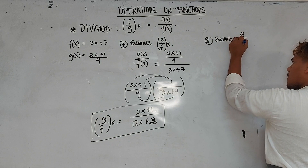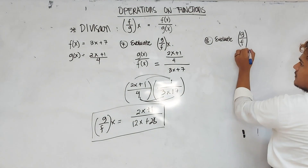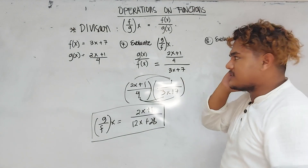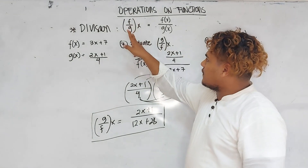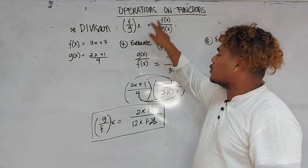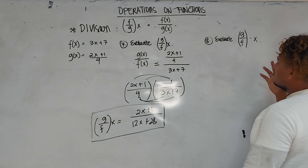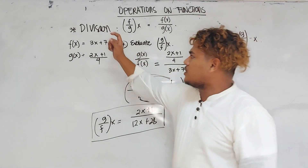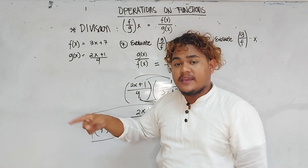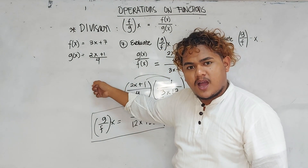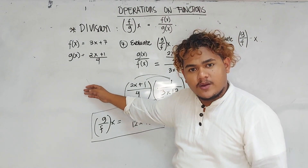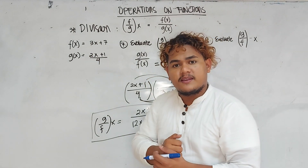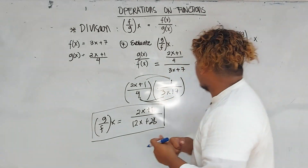Evaluate g over f of negative x. The concept states that f over g of x is equal to f of x over g of x, but in this case x becomes negative x. What will happen if x is negative? All the functions of your x will be in their negative form. So if g of x is 2x plus 1 over 4, this becomes negative 2x minus 1 over 4. If f of x is 3x plus 7, this becomes negative 3x minus 7. Everything is multiplied by negative itself.